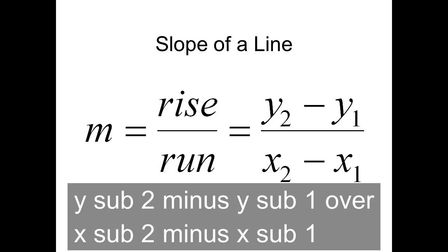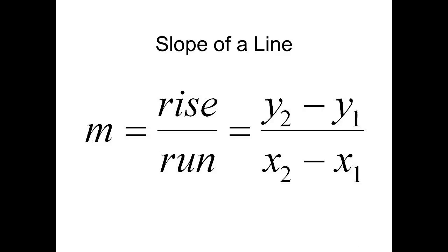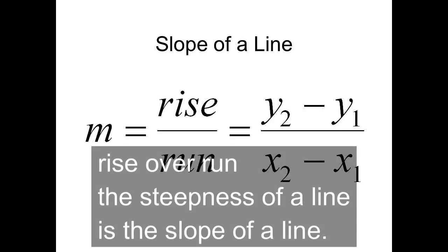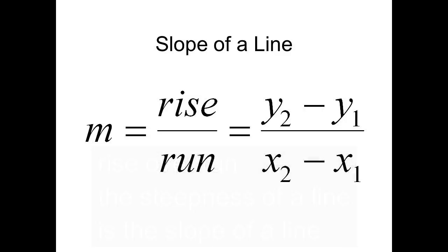Y sub 2 minus Y sub 1 over X sub 2 minus X sub 1. Rise over run — the steepness of a line is the slope of a line.